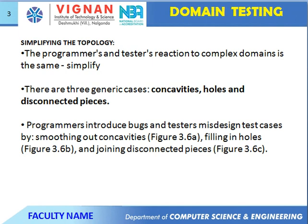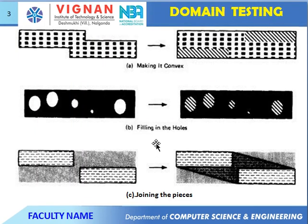Simplifying complex domains: the programmer and tester's reaction to complex domains is the same — simplify. There are three generic cases: holes, disconnected pieces, and concavities. First, making it convex: take the original domain and convert it by making it convex. For open holes, convert by filling the holes. For disconnected pieces, join the pieces by adding them together.